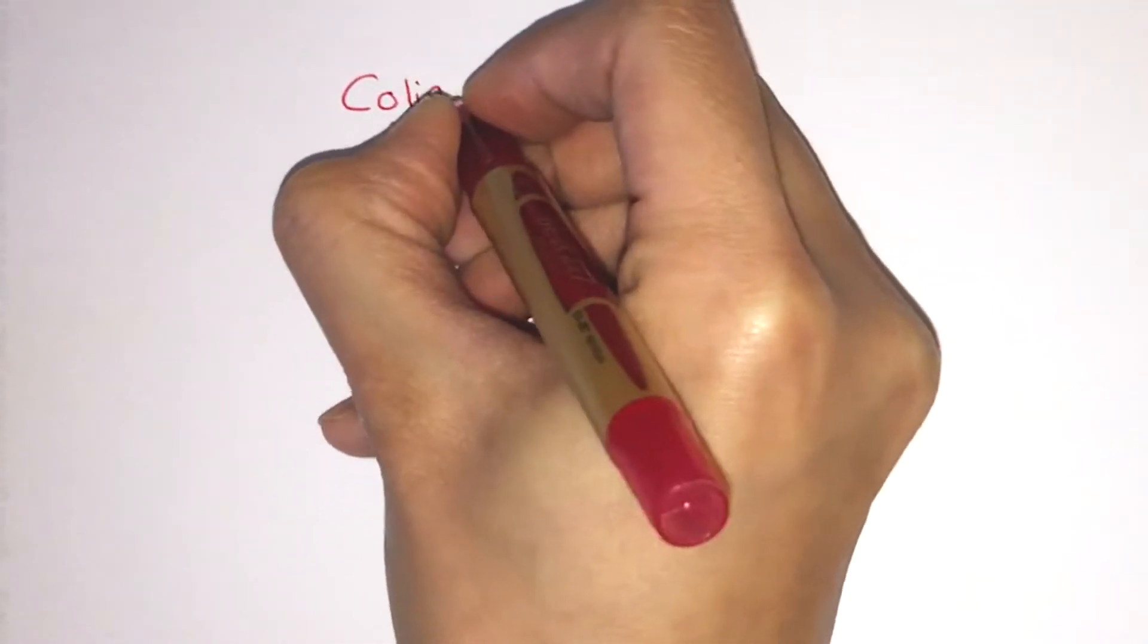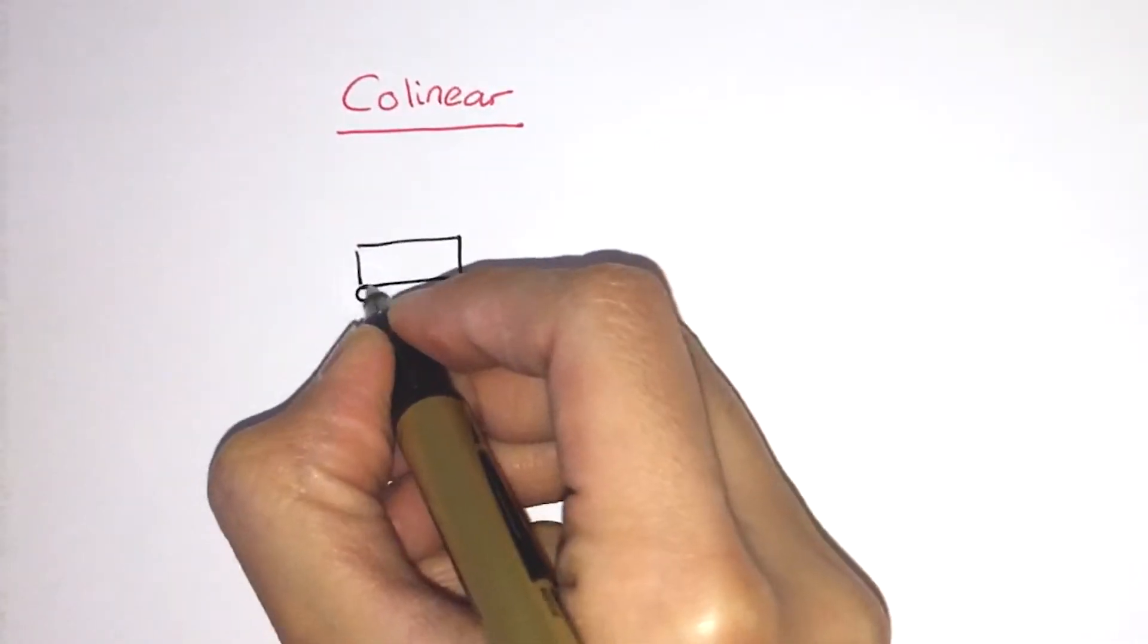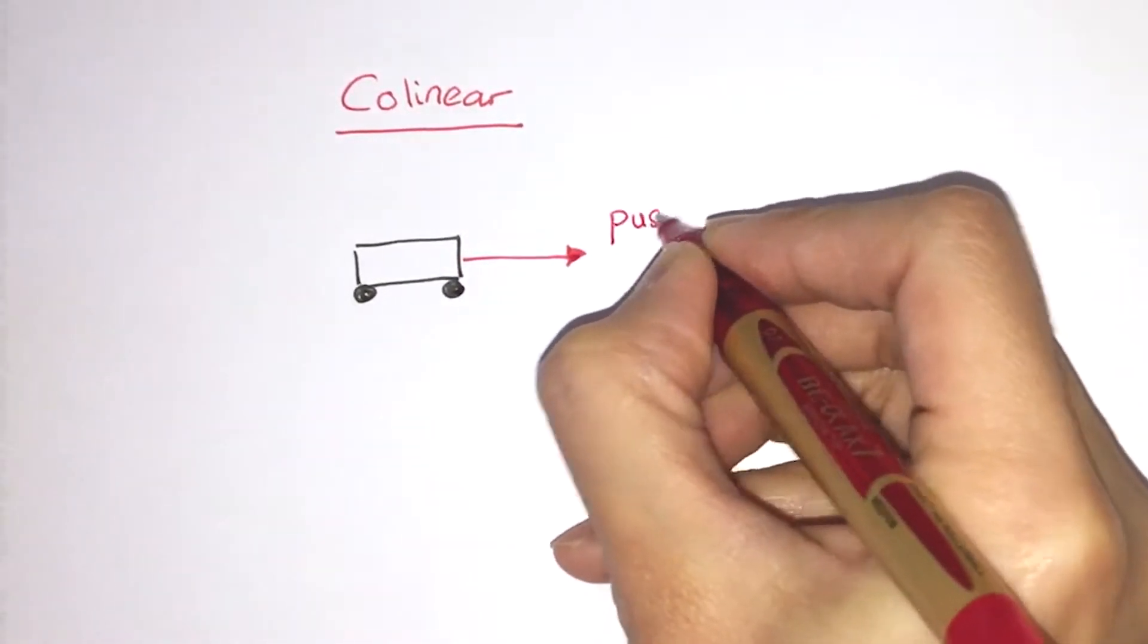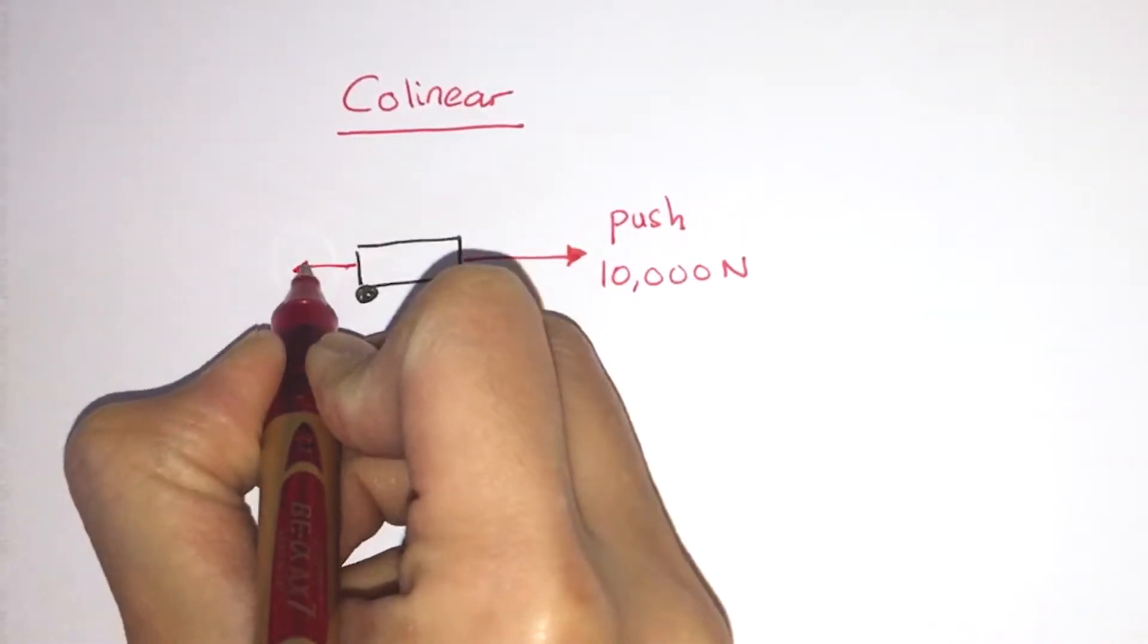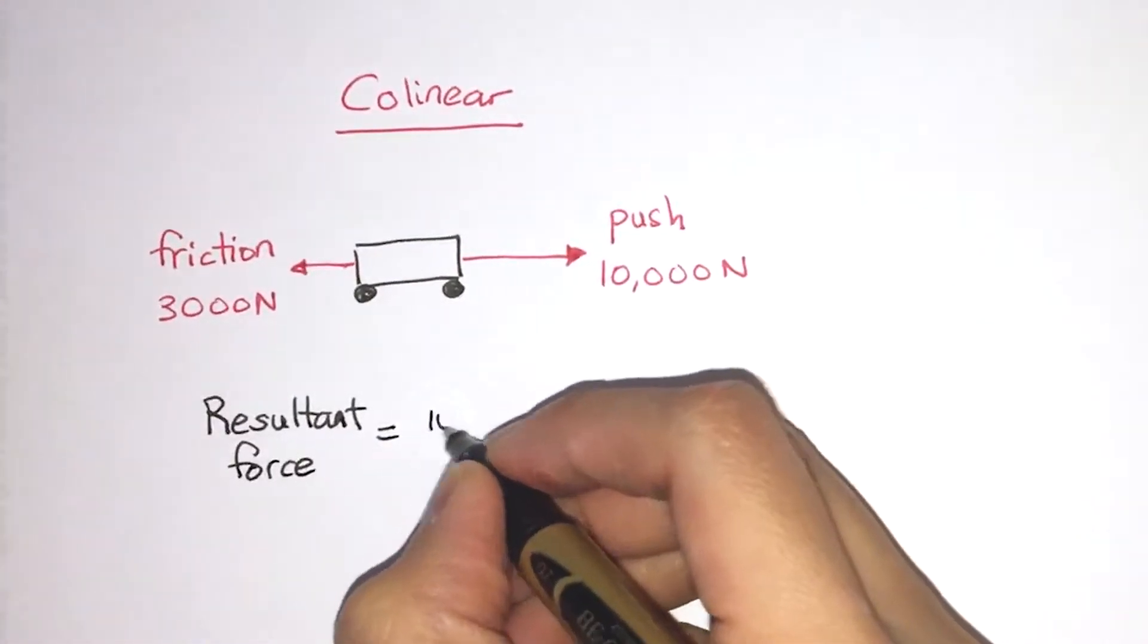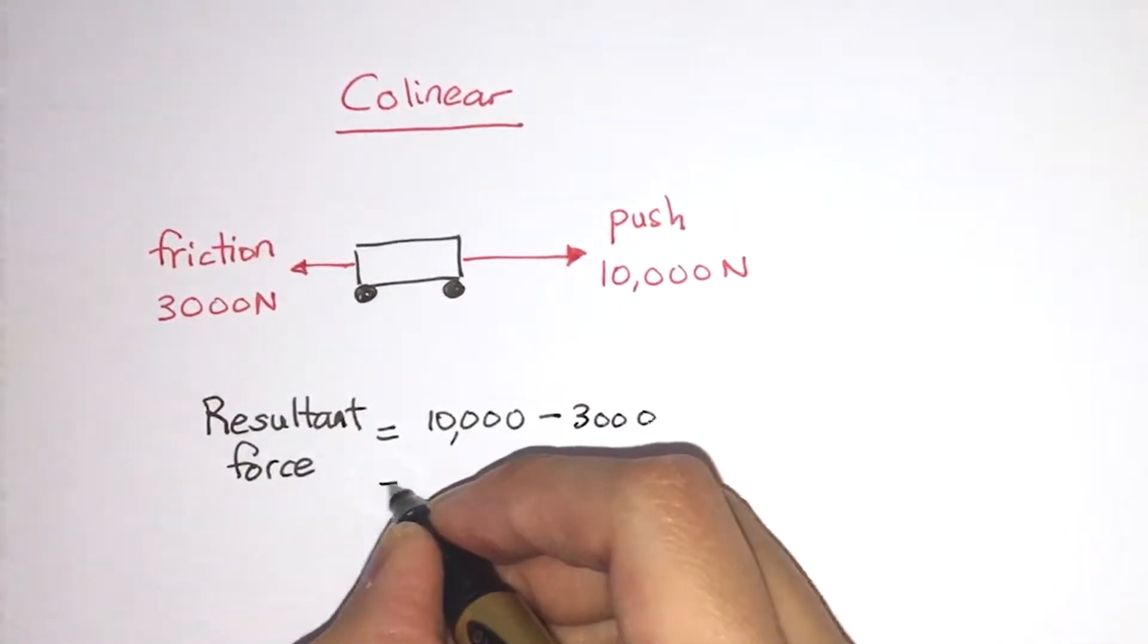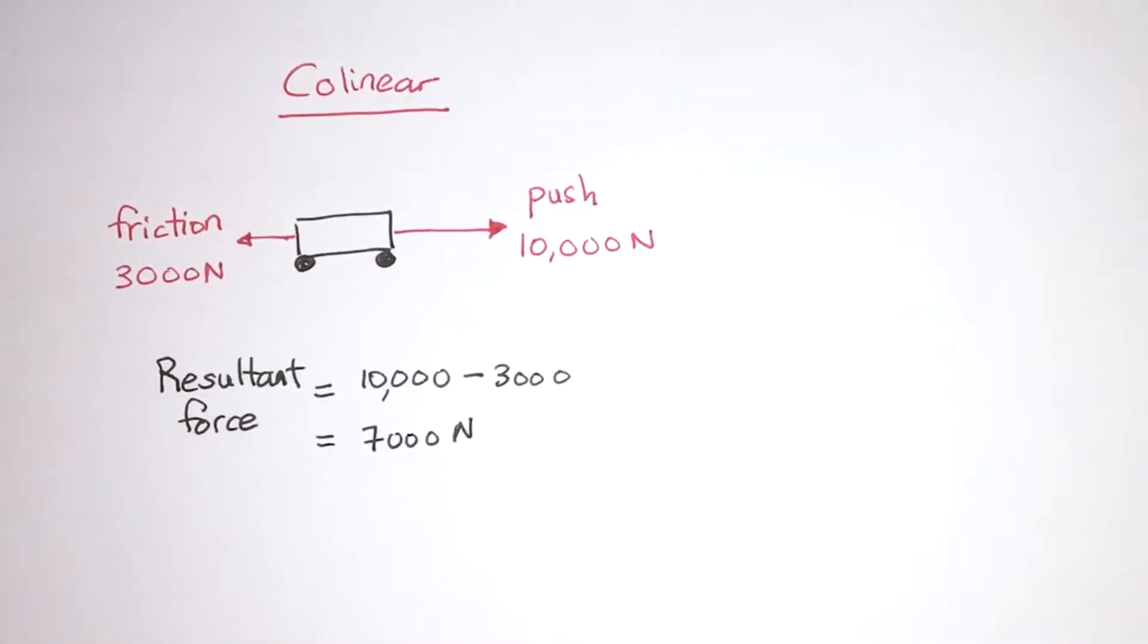Adding vectors that are collinear is relatively simple. You would have met that already in GCSE physics. So for example, if we have a car being pushed in one direction with a force of 10,000 newtons and the friction acting on the wheels is 3,000 newtons, then the resultant force is simply 10,000 minus 3,000 and you get 7,000 newtons as a resultant force. And this is for forces that are collinear.